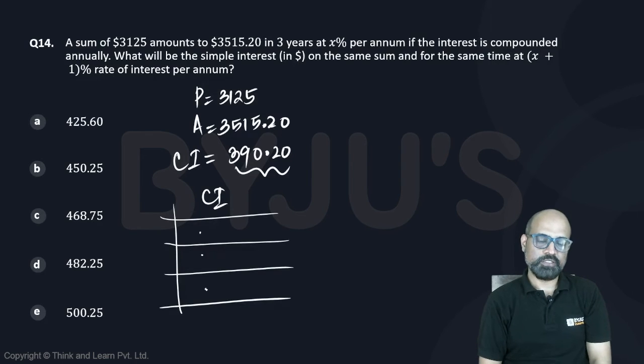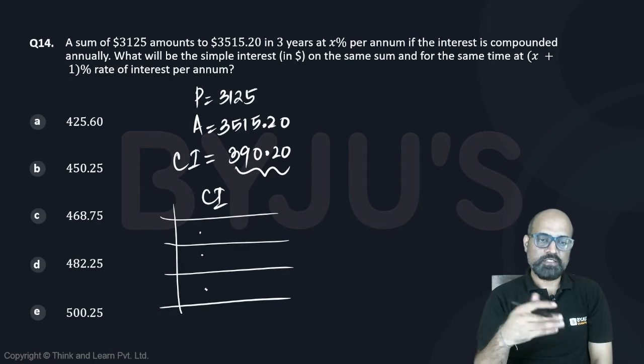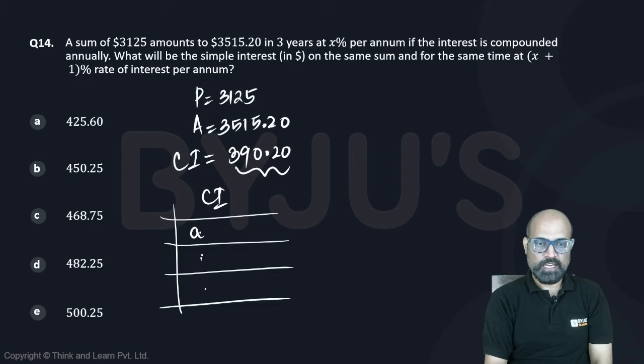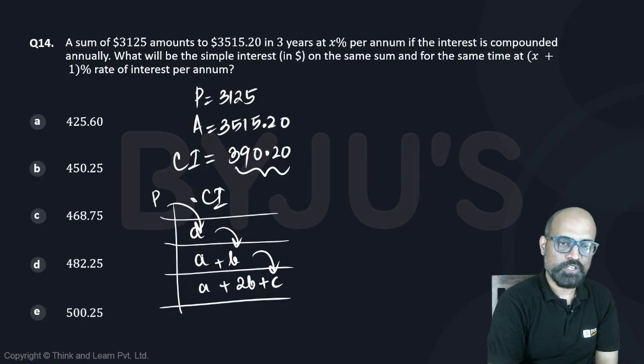We will have A over here, then we will have B, and then we will have 2B plus C. B and C should be related in the same way as A and B, and it should be same way related with P. P over here is going to be 3125.